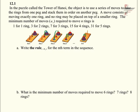This problem is from section 12.1. In the puzzle called the Tower of Hanoi, the object is to use a series of moves to take the rings from one peg and stack them in order on another peg. A move consists of moving exactly one ring, and no ring may be placed on top of a smaller ring.